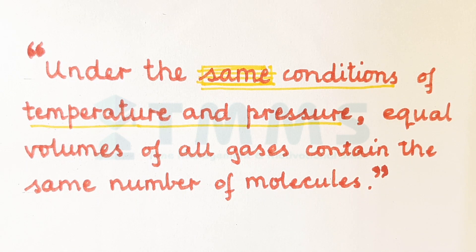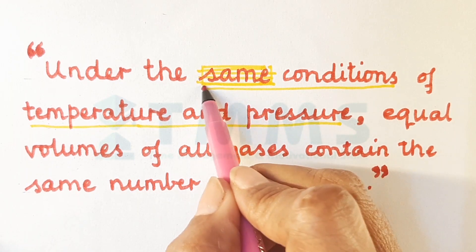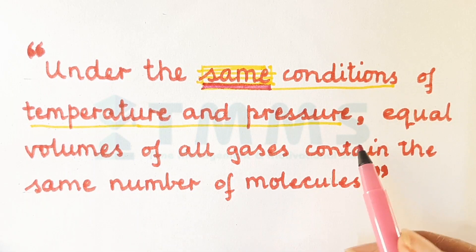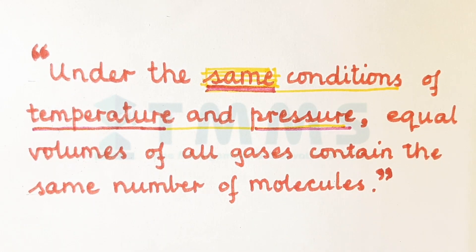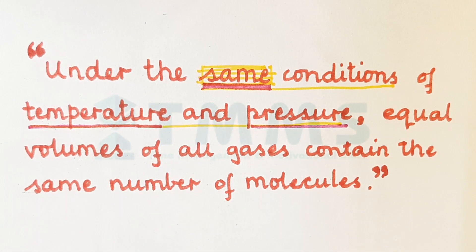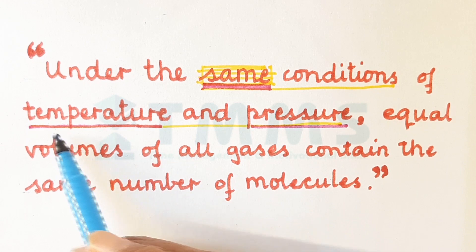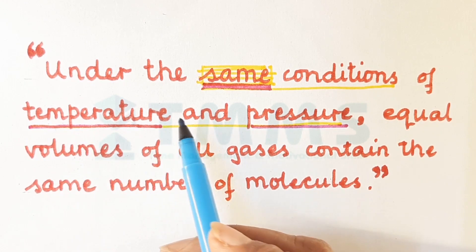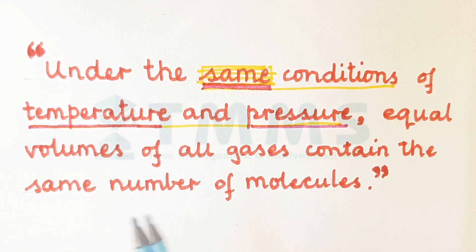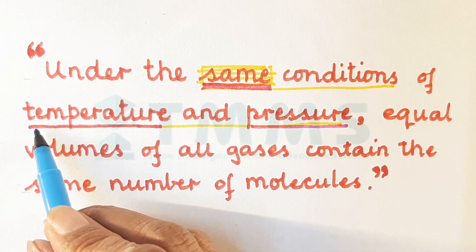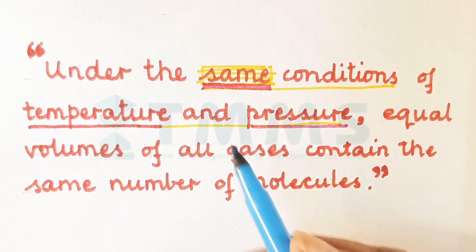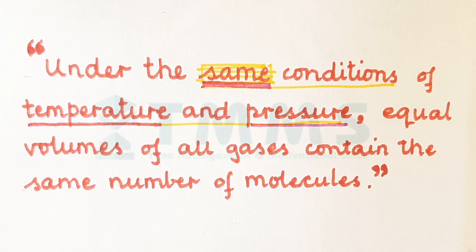Now why do we always start with the phrase where we have the same condition of temperature and pressure? Why do we talk about temperature and pressure always when we talk about the gas laws? The reason is that even if the temperature is changed slightly, volume of the gas will also change. And if the pressure also is changed, then the volume changes. And so we have to make sure that the temperature and pressure are kept constant or they should be the same condition for all gases.